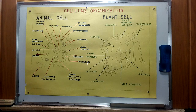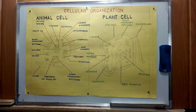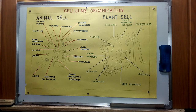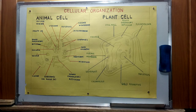Another cell organelle functions to package and transport glycoproteins — this is what we call the Golgi apparatus or Golgi bodies. They also assist in the separation of synthesized proteins and carbohydrates, apart from packaging and transporting glycoproteins. Adjacent to the Golgi bodies are organelles referred to as centrioles, which are used in cell division and the formation of cilia and flagella.